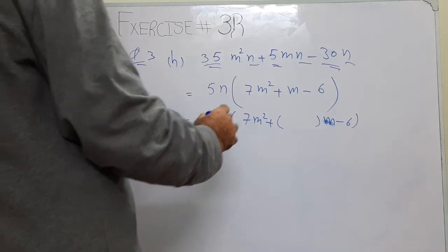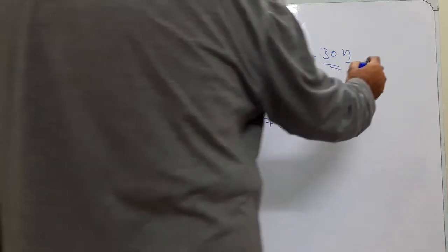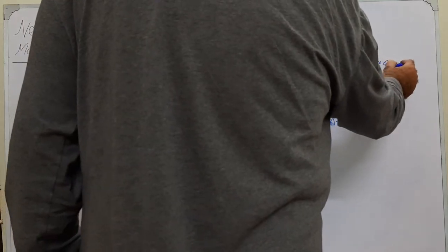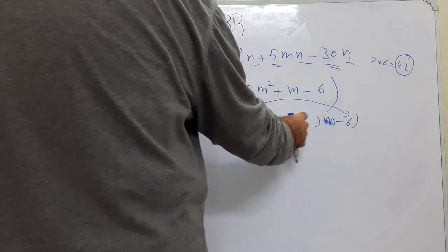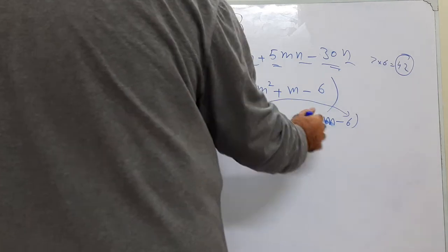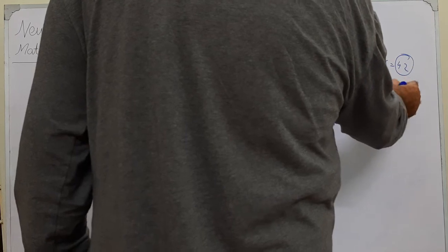So now this 7 will be multiplied with this 6. It becomes 42. 7 into 6 is equal to 42. We need to make factors of 42. We need 1 here. We need to fill the space of 1. So for 42 we have 6 into 7.